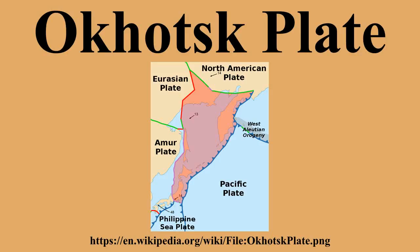The Okhotsk plate is a minor tectonic plate covering the Sea of Okhotsk, the Kamchatka Peninsula, Sakhalin Island, and Tohoku and Hokkaido in Japan. It was formerly considered a part of the North American plate, but recent studies indicate that it is an independent plate, bounded on the north by the North American plate.